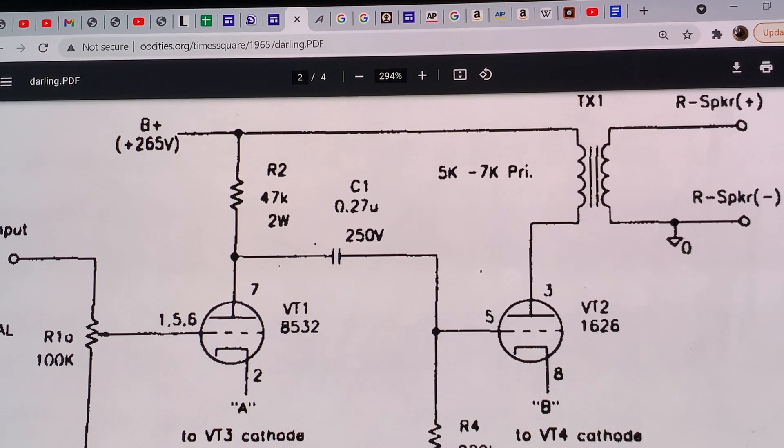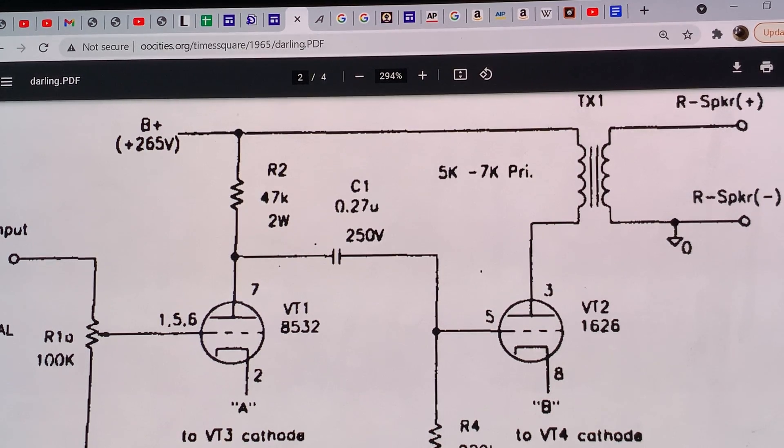If we want to keep it super budget, we can use a small 1 microfarad DC link capacitor for that, which is pretty cheap, and Mouser sells it. Mouser doesn't have any high quality audio coupling capacitors. You will need to go to other sources